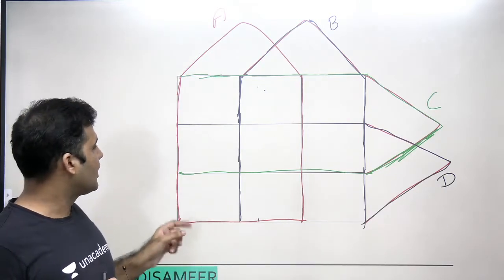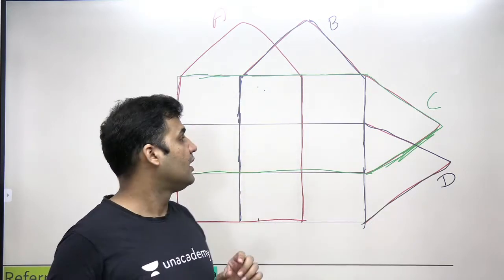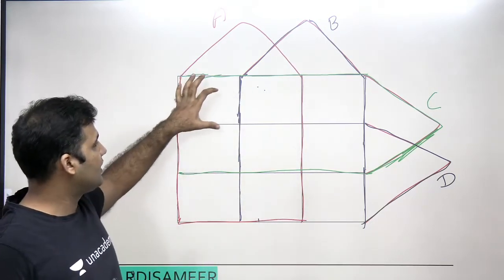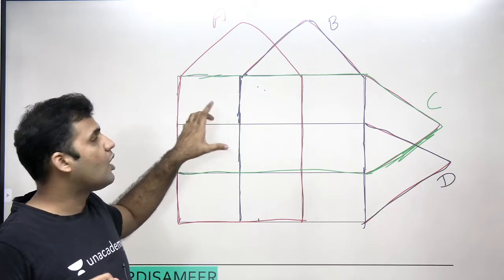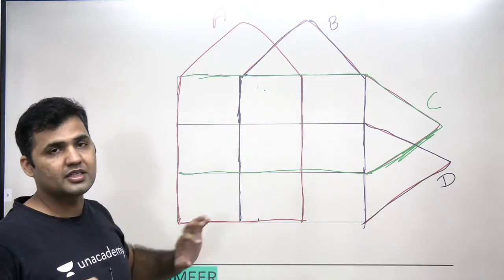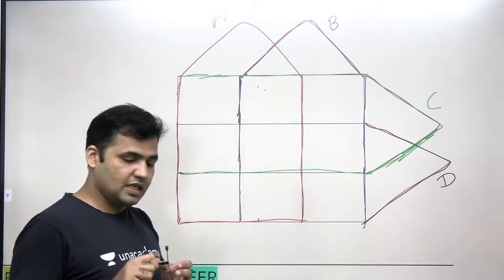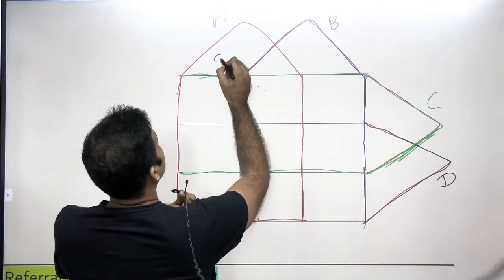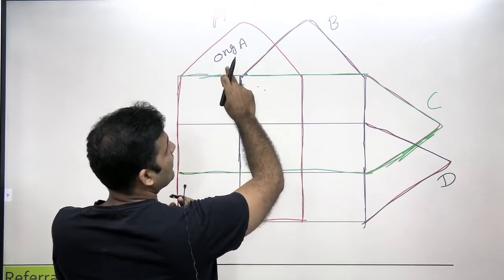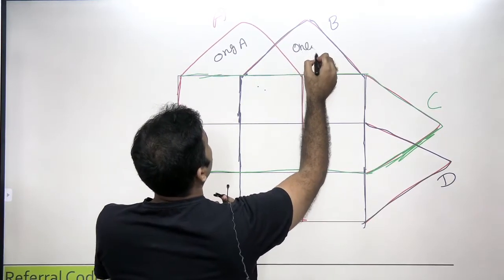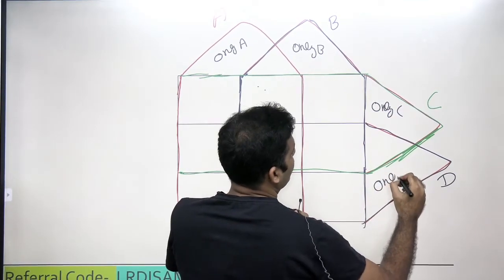If we want to find the area that belongs to only one set — meaning it does not intersect with any other set — these are the areas. This particular area is only A. This is only B. This is only C. And this part is only D.